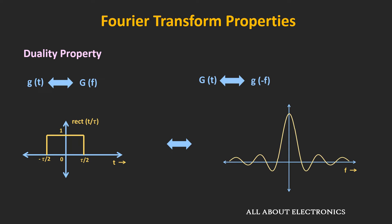The next property is the duality property. If we have a rectangular pulse rect(t) in the time domain, we know its Fourier transform is a sinc function. Now if that same sinc function exists in the time domain, then its Fourier transform gives back the rectangular function. Mathematically, if G(f) is the Fourier transform of g(t), then the Fourier transform of G(t) equals g(-f). If G is an even function, then the Fourier transform of G(t) equals g(f). Let's prove it.